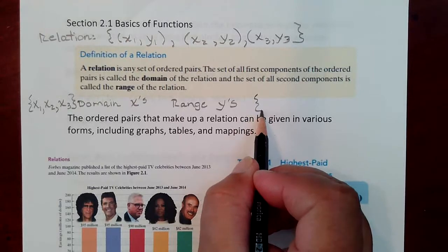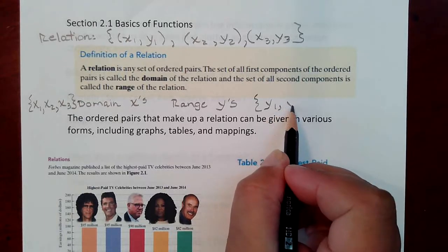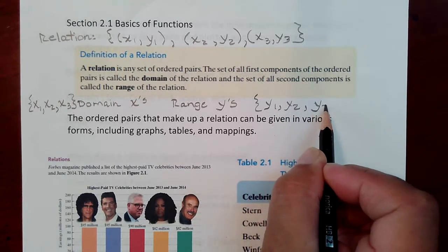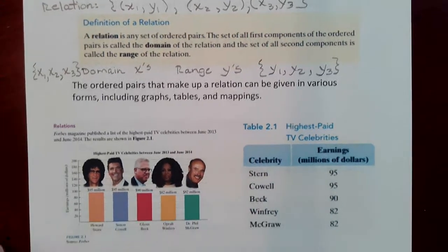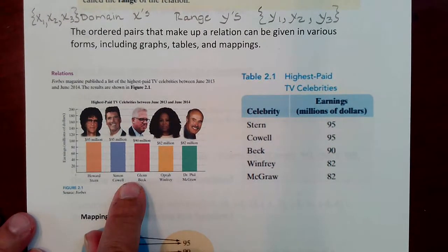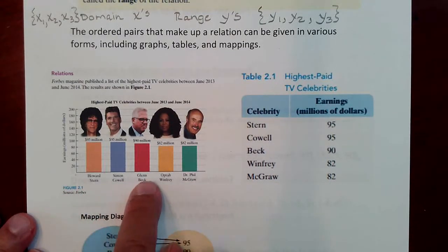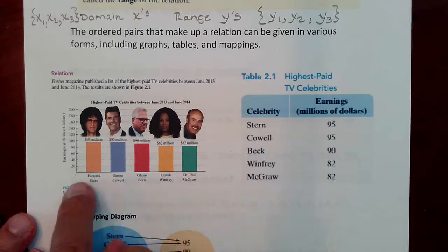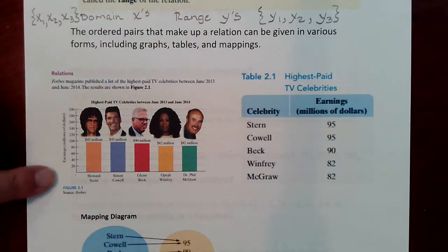And then all the Y values — the set of the Y values — would be what we call the range. Those values and ordered pairs can be presented in various formats. For instance, in this first picture you see a bar graph where the names of various celebrities represent the X values, stretched out horizontally along the horizontal axis. And the amount of money they make in millions represents the Y axis — a way of presenting XY pairs, what we call relations, a set of ordered pairs.